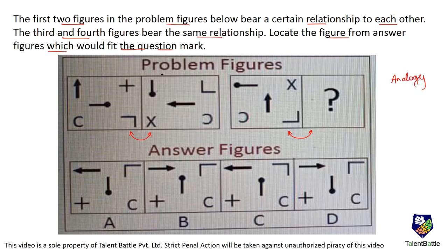There are two elements that are going to help you give the answer. The first element is in the top left corner - it comes to the center and it rotates anti-clockwise by 90 degrees. The same logic can be used here: this figure is going to come in the center and it has to be moved by 90 degrees in the anti-clockwise direction.